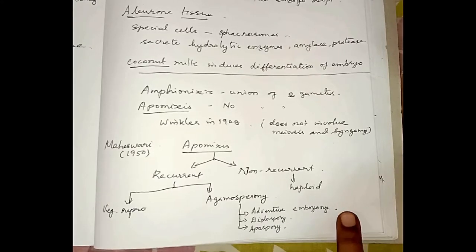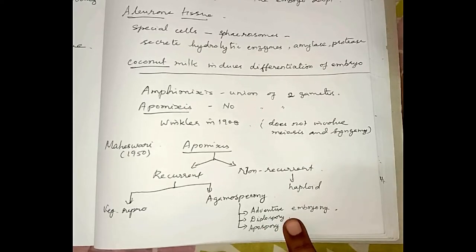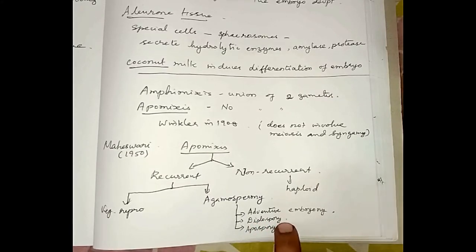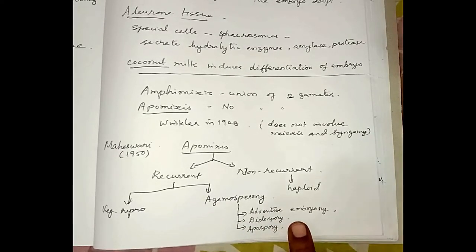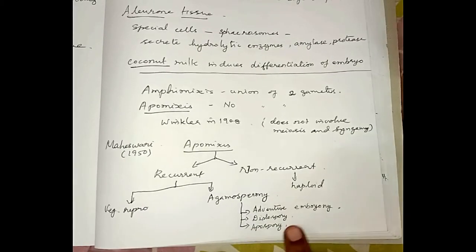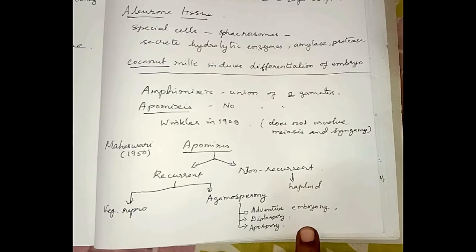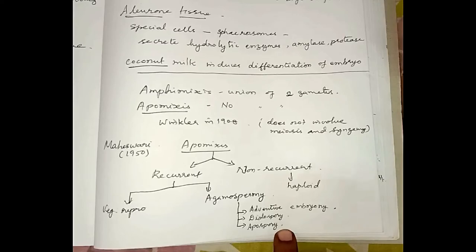Diplospory (otherwise called generative apospory) is where the embryo sac in diploid condition is formed from the megaspore mother cell itself without undergoing meiotic division. Examples include Eupatorium and Aerva. In apospory, the megaspore mother cell may undergo meiosis and form four megaspores, but the nucellar cells become activated and develop into a diploid embryo sac. This type is called somatic apospory, with an example being Parthenium.